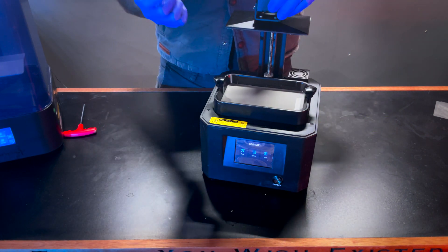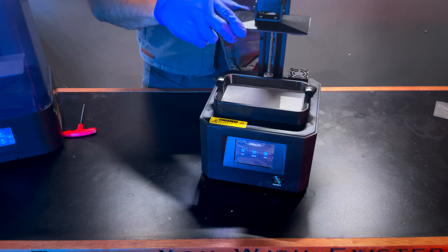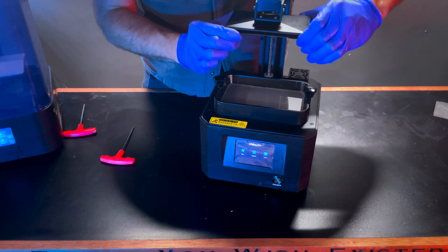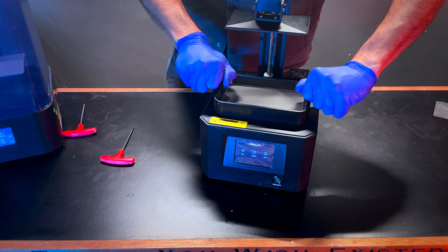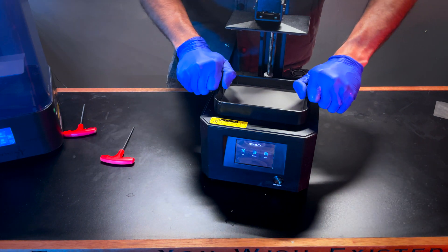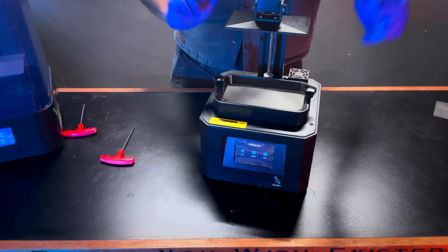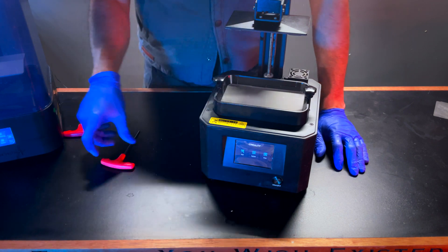Same as before, you're going to want to make sure your build plate is firmly attached to your Z-axis arm. If you have any attachments, such as a magnetic build plate, those need to be in place, and you need to make sure that your resin vat is secured to your 3D printer. Once you've checked all of those things, it's actually a fairly simple process.